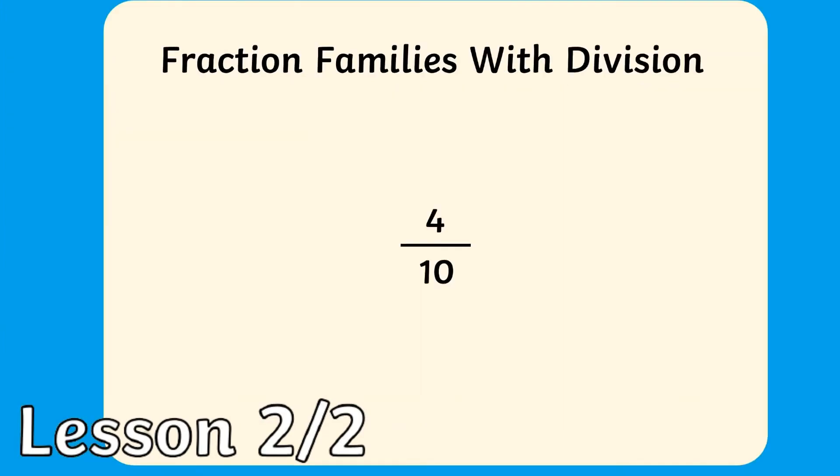So here we have four tenths. We can follow the same steps as before, except this time we'll divide the numerator and the denominator by two instead of multiplying. Four divided by two is two, so that becomes our new numerator.